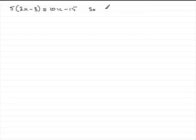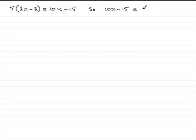So if I had 10x minus 15 and I was asked to factorise this, what I would get back is 5 bracket 2x minus 3. So you can see it's the opposite of expanding a bracket.